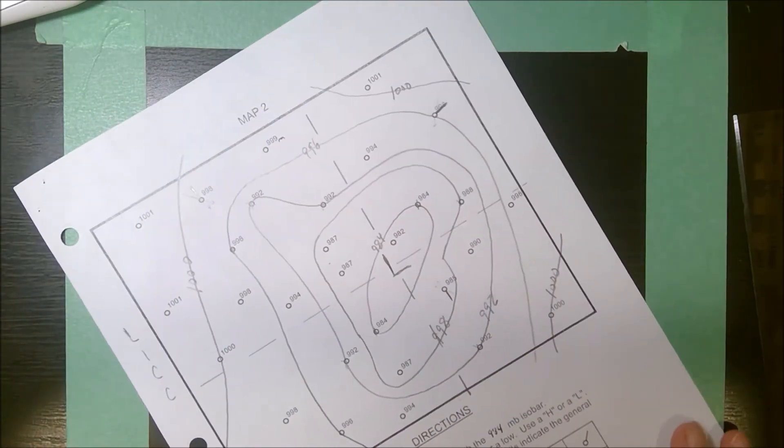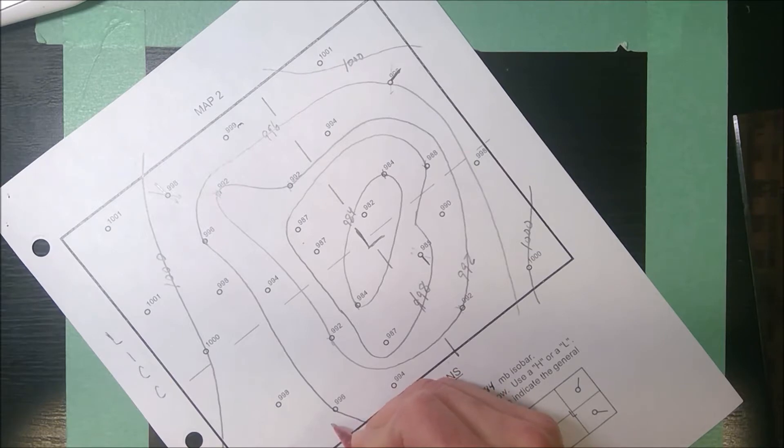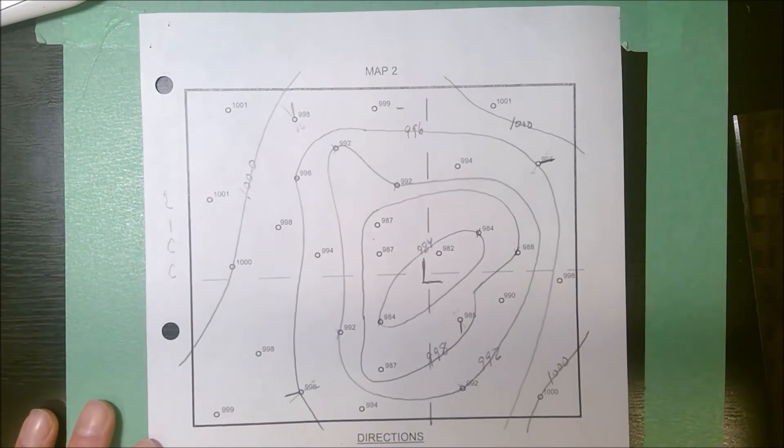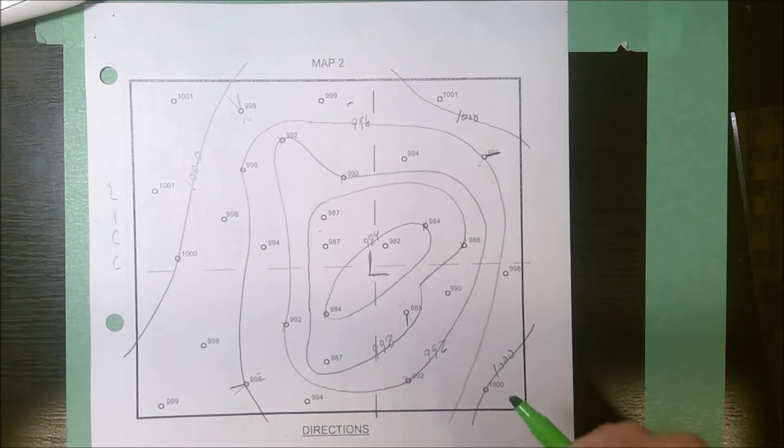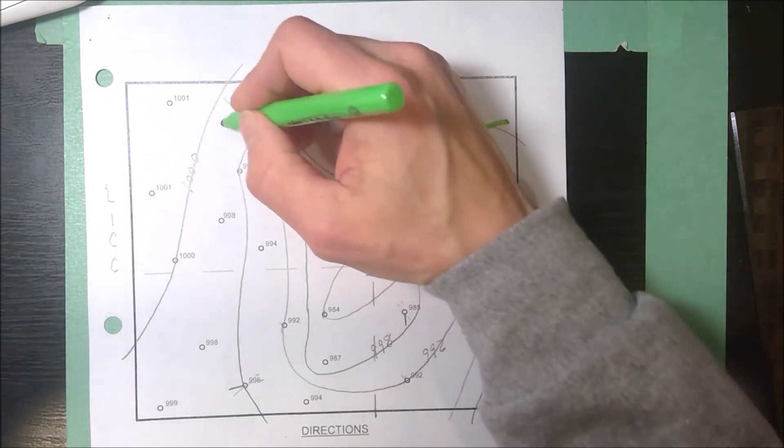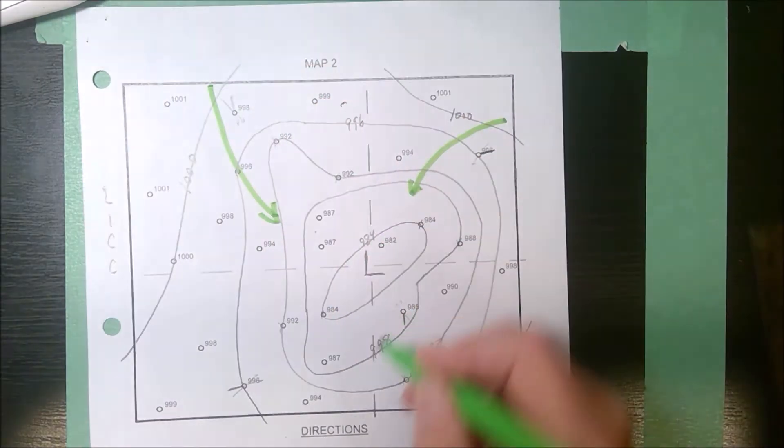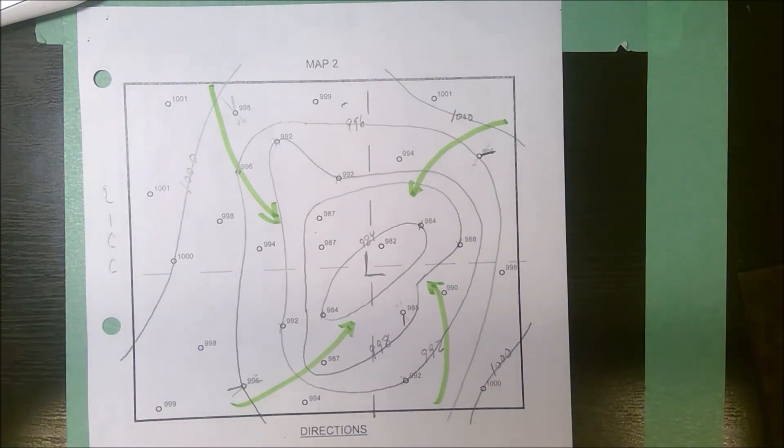Finally, over here, maybe I'll take this 996. The lower pressure is here, the higher pressure is outside. Pressure gradient pushes it towards the center, but it's deflected to the right. So the winds are going this way. So in a low pressure, the winds converge, they move towards the center. But you see that the winds would be coming in and going counterclockwise based on those four station models that we have drawn.